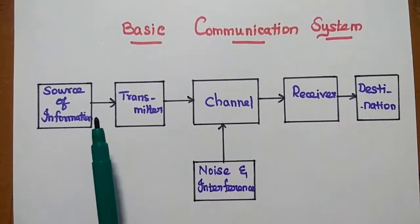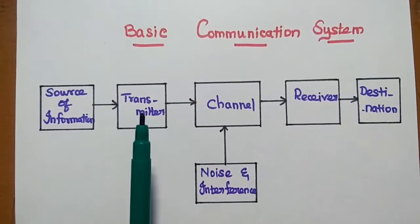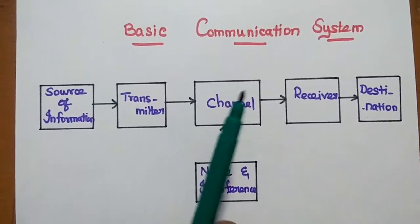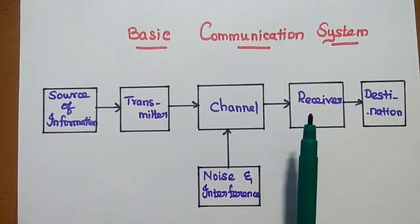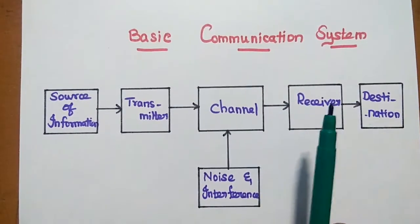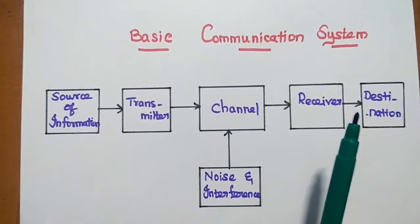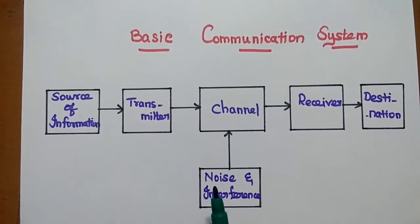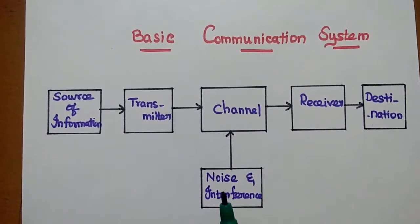The transmitter converts the message signal into a suitable form for transmission over the channel. The receiver receives the signal from the channel and delivers the original signal to the destination. In the channel, some noise and interferences occur.